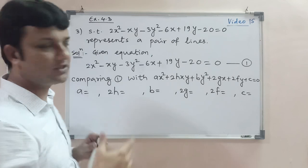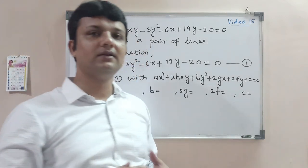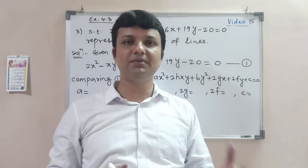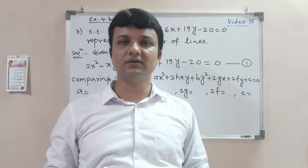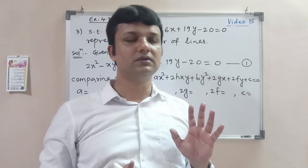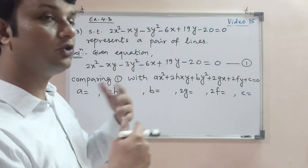So what we will do is use the condition. I have written the condition in the previous video: ABC plus 2FGH minus AF² minus BG² minus CH² equals 0. We have to prove this equation is a pair of lines.